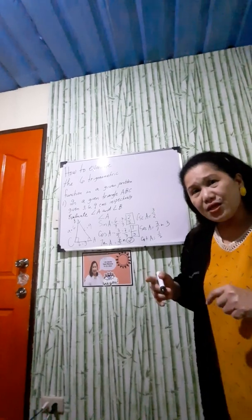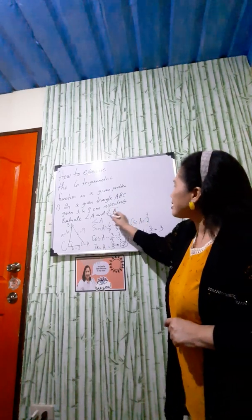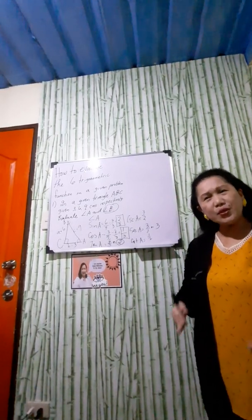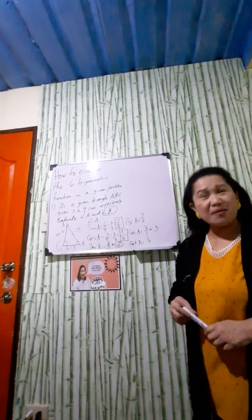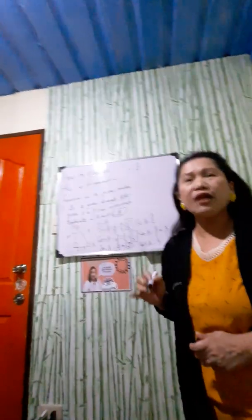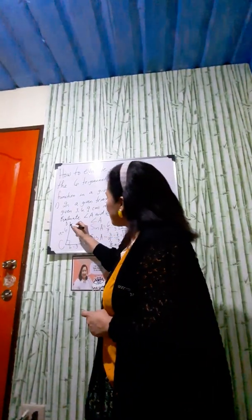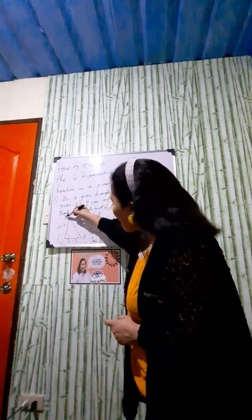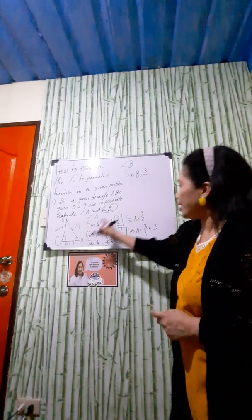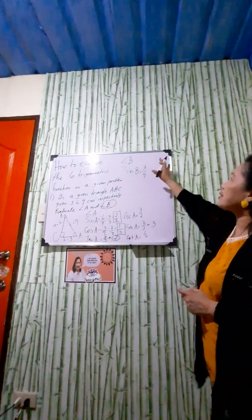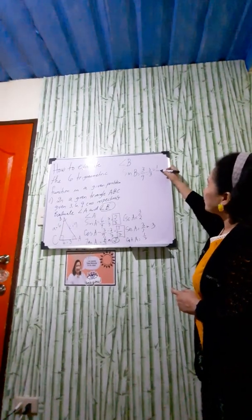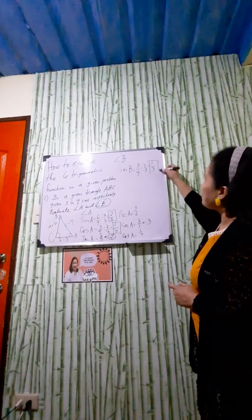Now let us get the six trigonometric functions of angle B. I will give you the primary functions and you will need to get the co-functions. Going back to the given triangle, for angle B, the opposite side is three and the hypotenuse is nine. So sine B equals three over nine, and dividing both by three gives one over three, so sine B equals one-third.